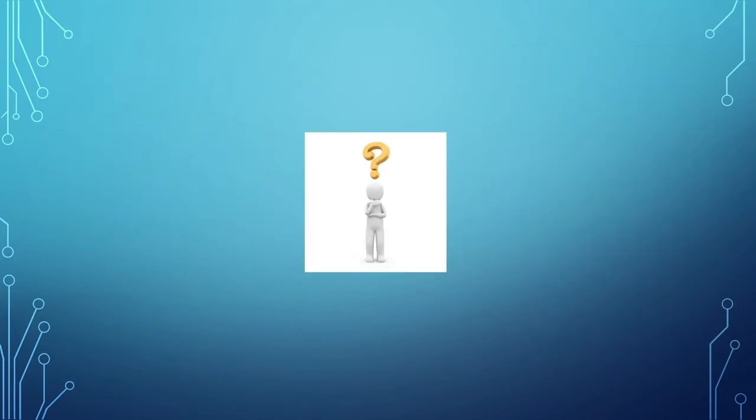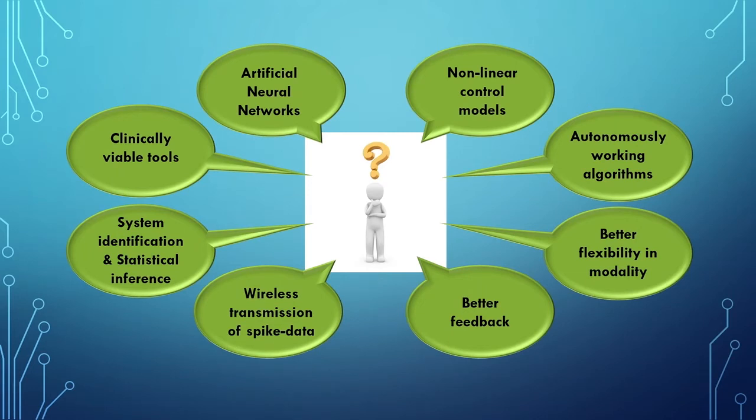Now we discuss possible directions for future research. Artificial neural networks or ANNs can be used to represent the non-linearities in complex neural circuitry. Feasible algorithms for closed-loop control can be developed that work autonomously without the intervention of trained technicians. Creating a closed-loop with more feedback information and using clinically viable tools can improve BCI performance.